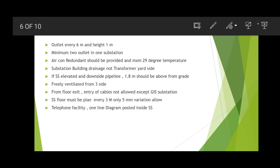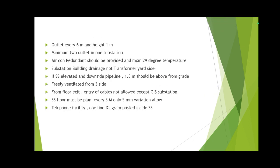The substation floor must be plain, with only 5 mm variation allowed per every 3 meters. Telephone facility should be inside the substation, and a one-line diagram must be attached on the wall or near the door at any SS point. An overhead crane is required for substations of 69 kV or above. In areas with high-level underground water, a two-storey building is required — one storey for cables and one storey for equipment.